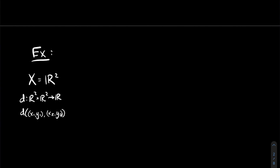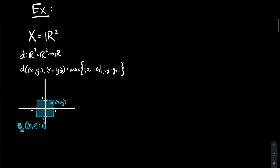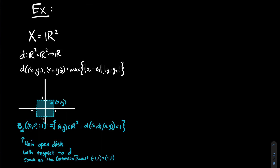Let's look at an example. My first topological space is the plane R². The first metric D is the maximum of the absolute differences between the two components — in other words, the max of |x₁ − x₂| and |y₁ − y₂|. The unit ball under this metric is a square. The unit open disk with respect to D is the same as the Cartesian product of the open interval (−1, 1) for X values with the open interval (−1, 1) for Y values.